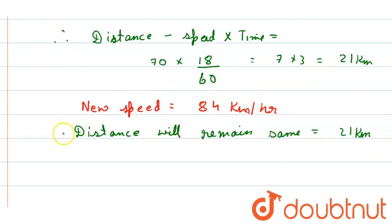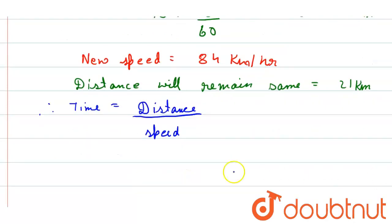Then we can write, therefore, time is equal to distance by speed. So we will get 21 by 84, that will be 1 by 4 hour.